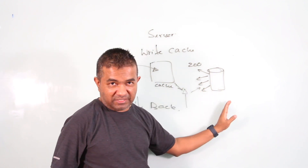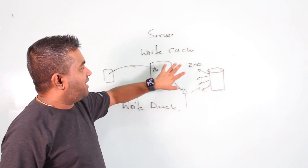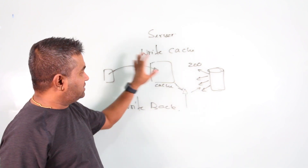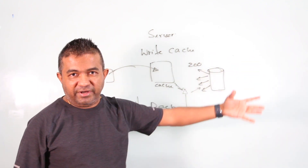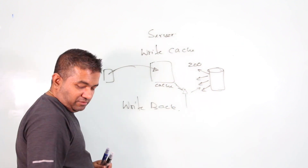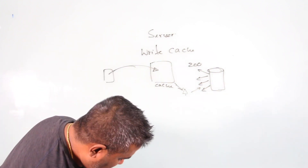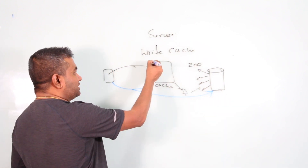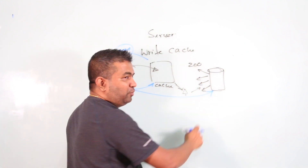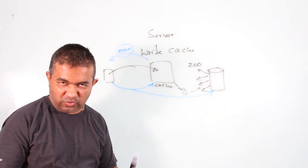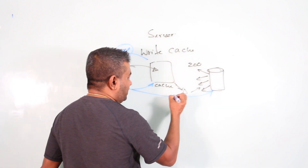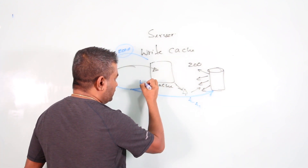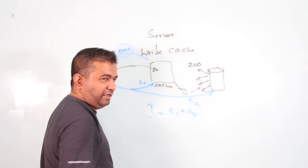You need to be careful with write-back caching because if something happens to the cache server, you could lose data. You should have a distributed cache server. There is also write-through cache: when you write to the cache, in the same transaction you also write to the database. People always read from the cache, but writing goes to both. In this case, the cache and database are always in sync, but the trade-off is total write time T equals T1 (cache write) plus T2 (database write), so writes are slower.